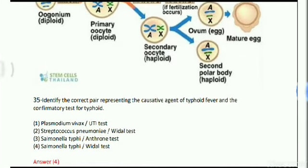Next: identify the correct causative agent of typhoid fever and the confirmatory test for typhoid. This is from human health and disease. Options: Plasmodium vivax with Widal test; Streptococcus pneumoniae with Widal test; Salmonella typhi with anthrone test; Salmonella typhi with Widal test. We know that Salmonella typhi is the bacterium that causes typhoid, and the confirmatory test for Salmonella typhi is the Widal test.